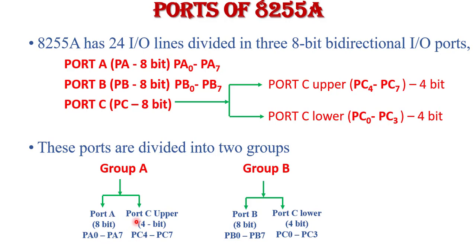Group A has Port C Upper, 4 bits PC4 to PC7. So we can say that Group A has 12 bits — 8 bits of Port A and 4 bits of Port C Upper. Similarly, Group B contains Port B (PB0 to PB7) and Port C Lower (PC0 to PC3), also 12 bits — 8 bits of Port B and 4 bits of Port C Lower.